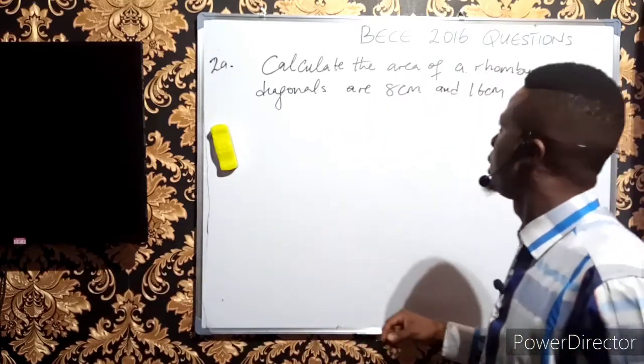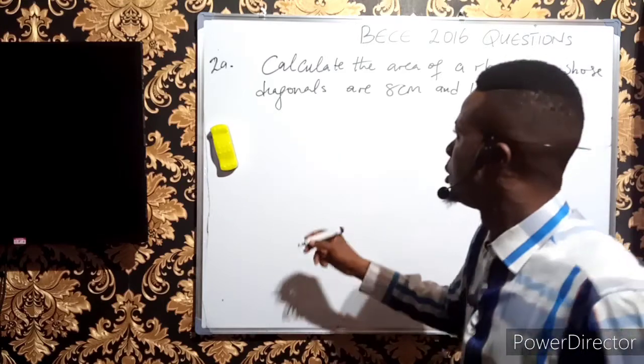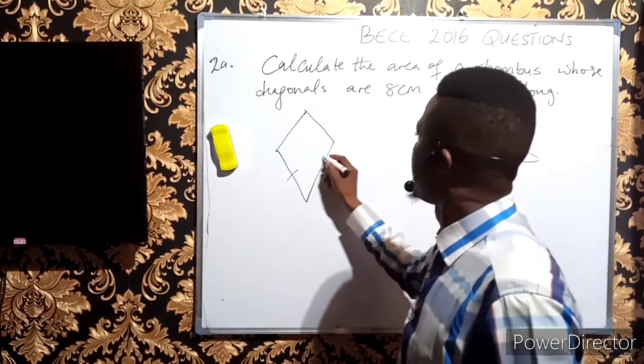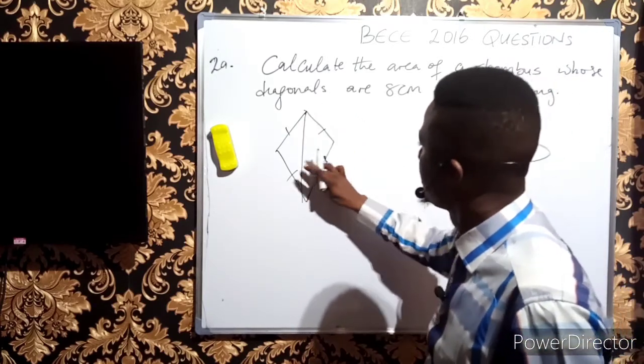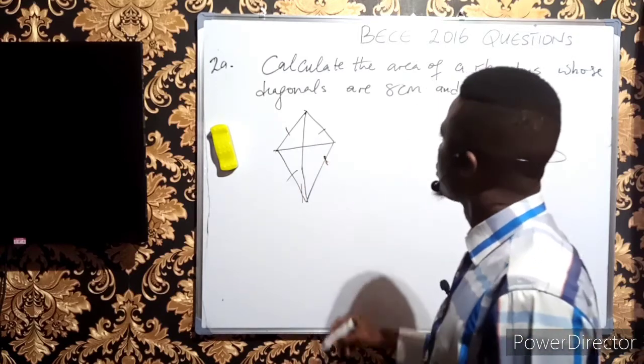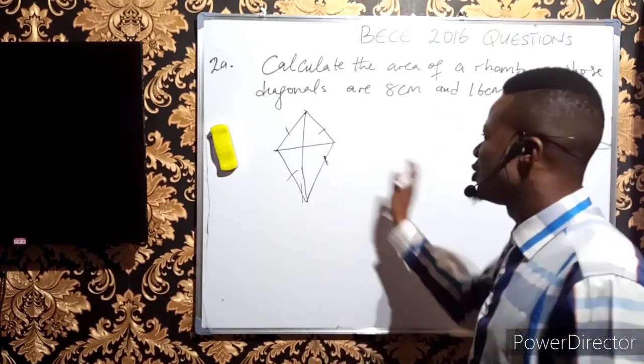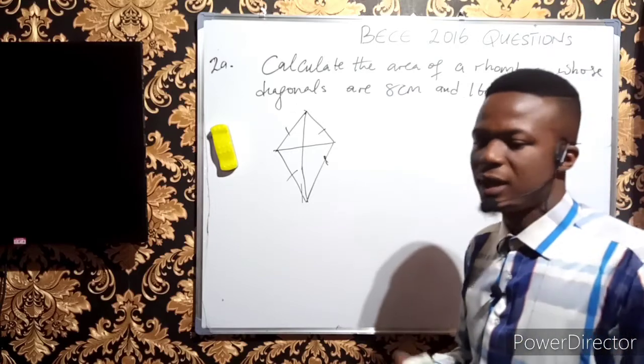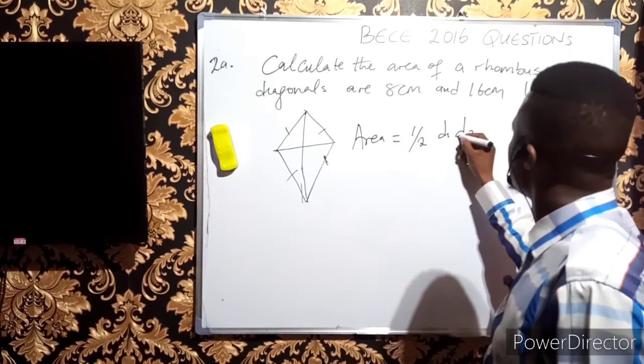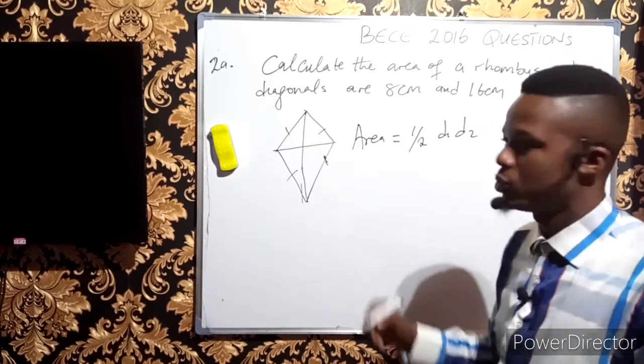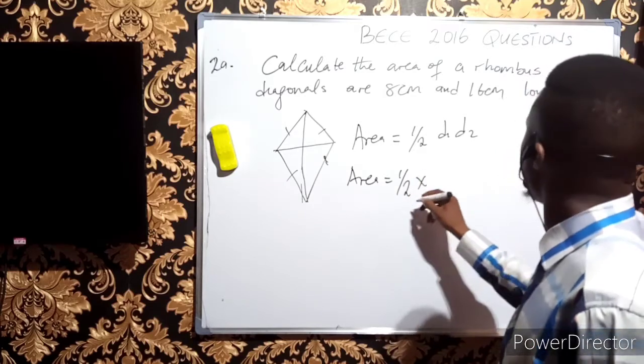Question 2a asks us to calculate the area of a rhombus whose diagonals are 8 cm and 16 cm long. A rhombus has all sides equal. The diagonal joins two vertices together. Provided the diagonals are given, the area of a rhombus is ½ × d₁ × d₂, which is half times the product of the diagonals.